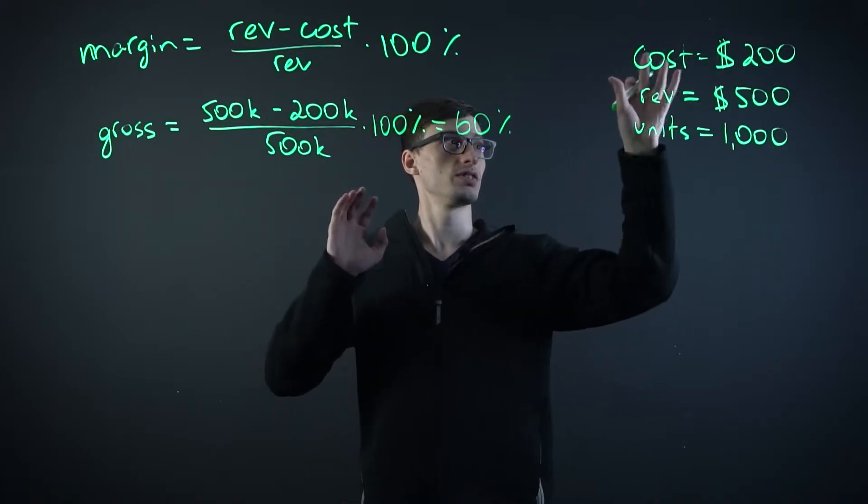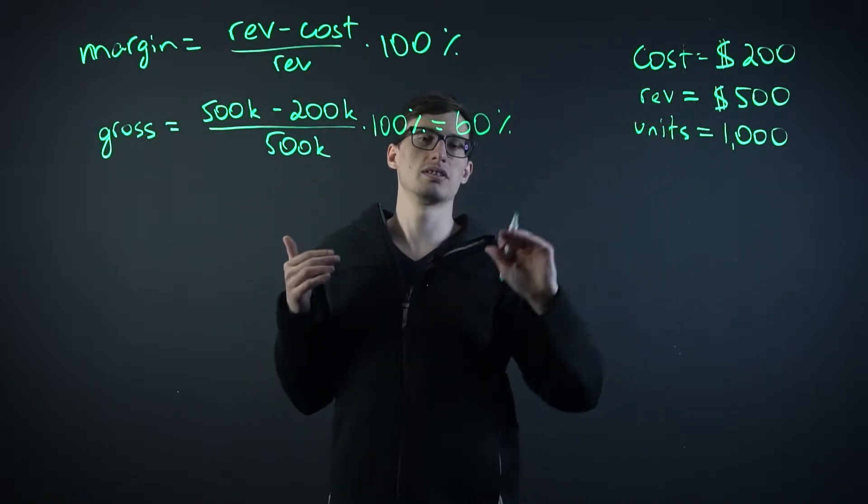$500 minus $200 is $300 divided by $500 is 0.6 times 100%, it's 60%. So this is the gross profit margin. It's just the cost of the goods compared to the revenue. That's it.